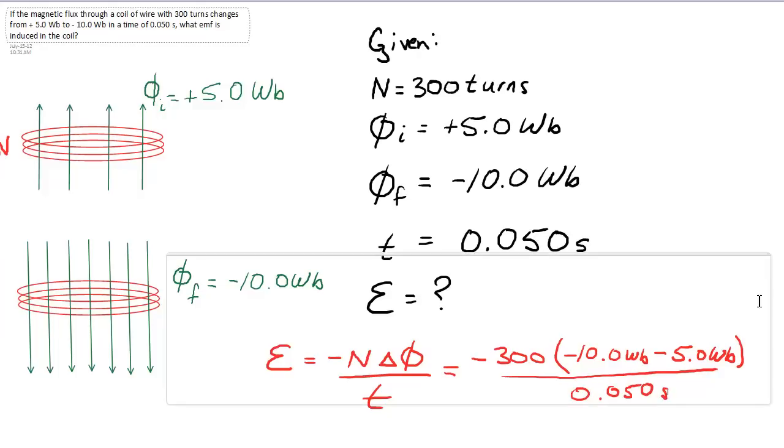Now notice the top, the change in flux, when I go minus 10 minus 5, I get a change in flux of minus 15. If you were unaware of the change in direction here, you might assume that your change in flux is simply 5.